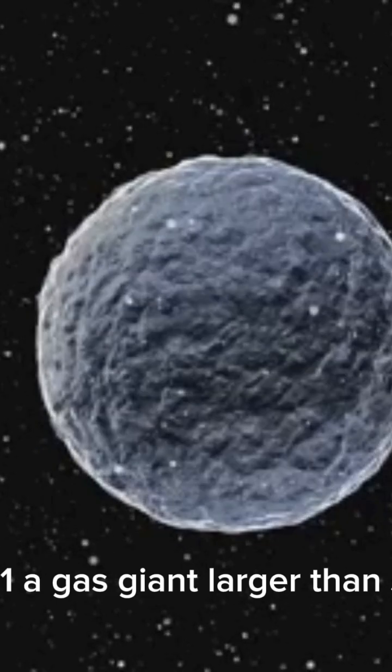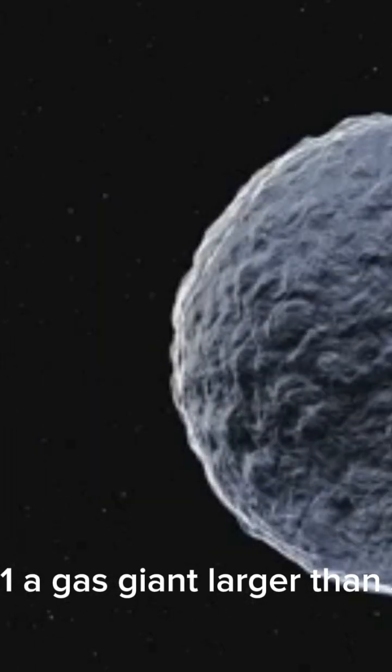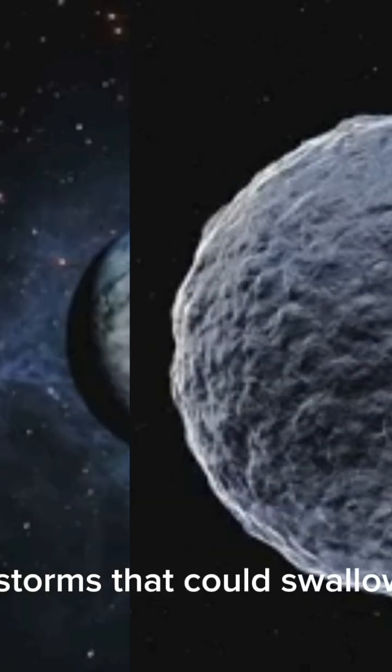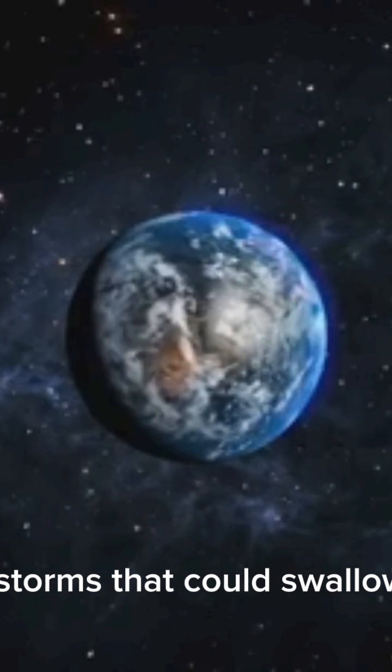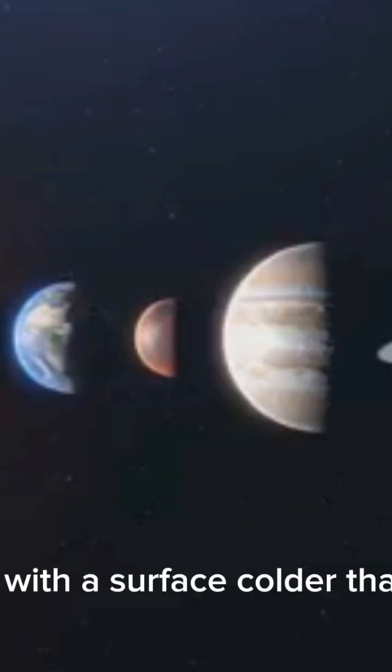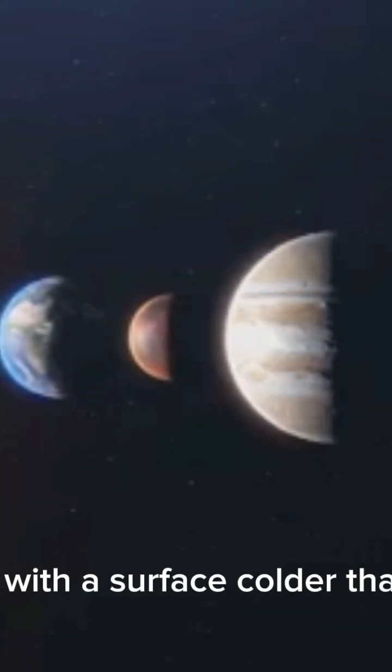Planet 1, a gas giant larger than Jupiter, swirling with storms that could swallow Earth whole. Planet 2, an icy world with a surface colder than Antarctica.